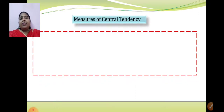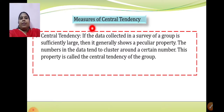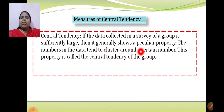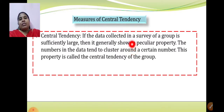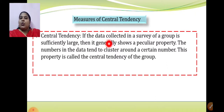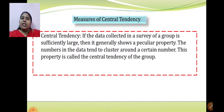Let us quickly see the definition of central tendency. If the data collected in a survey of a group is sufficiently large, then it generally shows a peculiar property. The numbers in the data tend to cluster around a certain number. This property is called the central tendency of the group. Suppose you are collecting data of a large number of students for some particular purpose. You will find that the data will show a peculiar property — all the numbers in the data will cluster around a certain number. This property is actually called central tendency of the group.